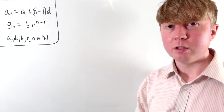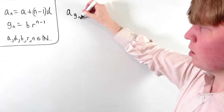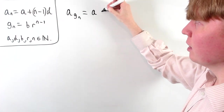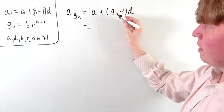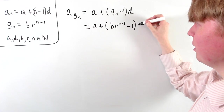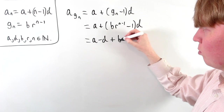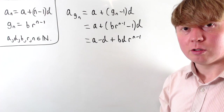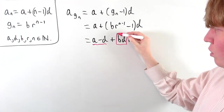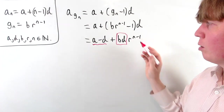Now let's look at the other way round: starting with an arithmetic sequence and taking a subsequence according to a geometric sequence. We replace n in the nth term formula by g_n, giving a plus g_n minus one times d. Substituting g_n equals b r to the n minus one, we get a plus b r to the n minus one minus one, times d. Expanding and collecting the constant terms gives a minus d, plus bd times r to the n minus one. So we end up with a constant term plus a multiple of a geometric sequence, where the geometric part has first term bd and common ratio r.